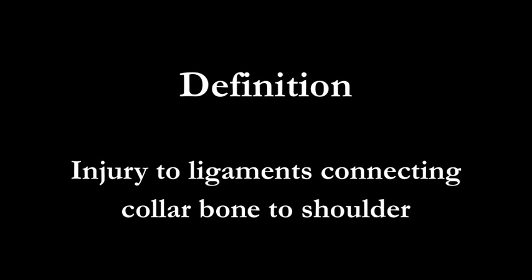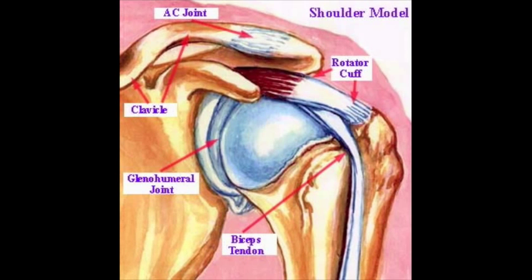The definition is an injury to the ligaments connecting the collarbone to the shoulder. In this model, you can see the AC joint on the top of the shoulder.